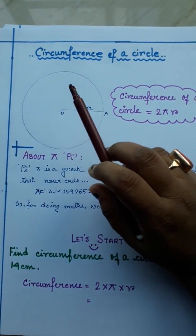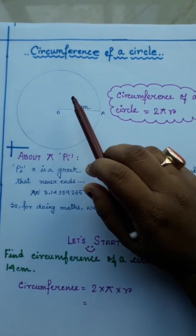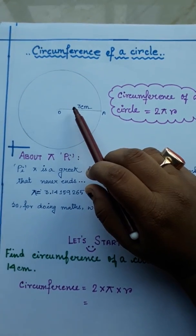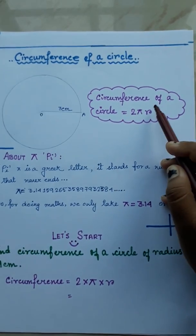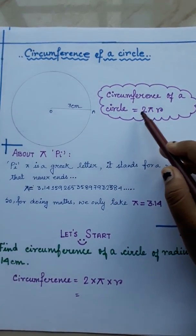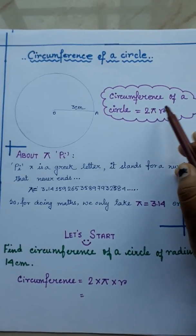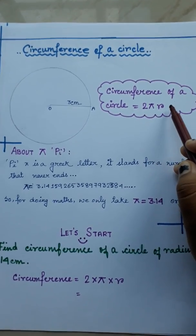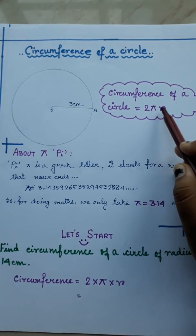Now, we will find out how we can measure the circumference of a circle. Here's the formula for measuring circumference of a circle. That is 2 pi r.